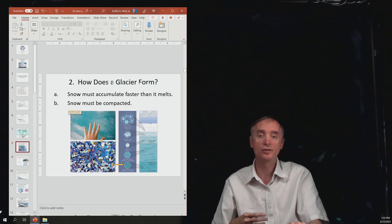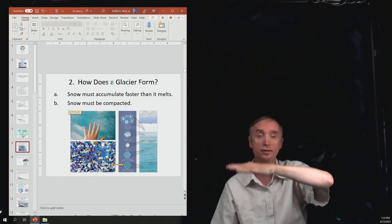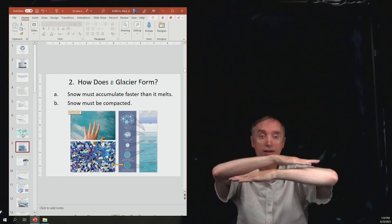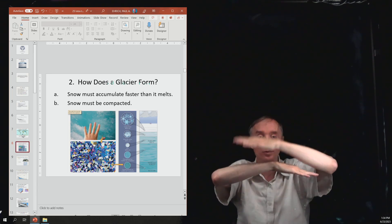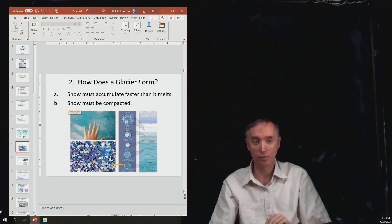Notice that this is very similar to when we talked about the formation of coal. With coal, you had a tree that would die in a swamp, and then another tree would die and lay on top of it, and the weight of all that material would start to compress that organic material and turn it into coal.